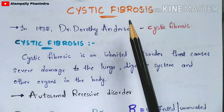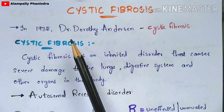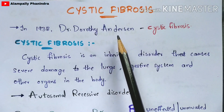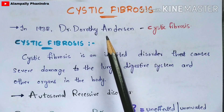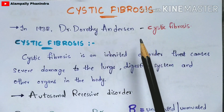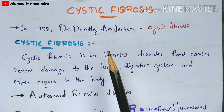Cystic fibrosis is a disease that was discovered in 1938 by a scientist called Dr. Dorothy Anderson, who gave a deep description about cystic fibrosis.